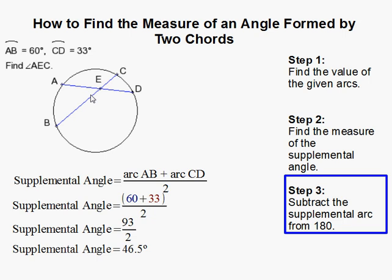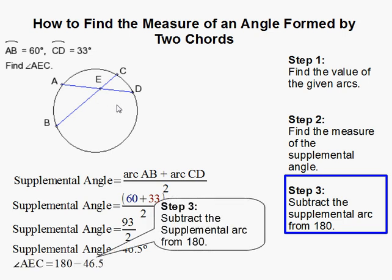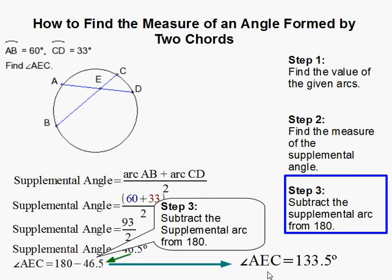Now we have to subtract that from 180 degrees, and here's why. Since this angle is 46.5 degrees, and both angles lie on segment BC, they add up to 180 degrees. So if we subtract 46.5 from 180, that gives us the remainder — angle AEC equals 133.5 degrees. And that completes our problem.